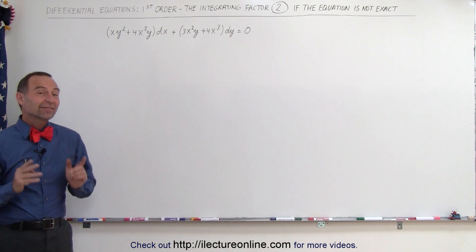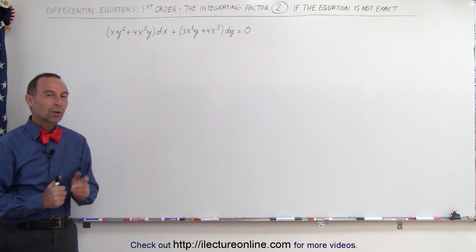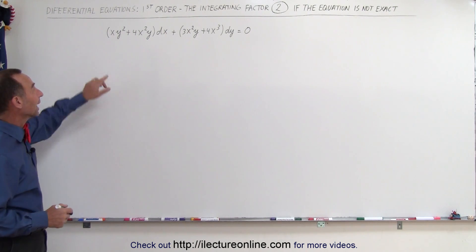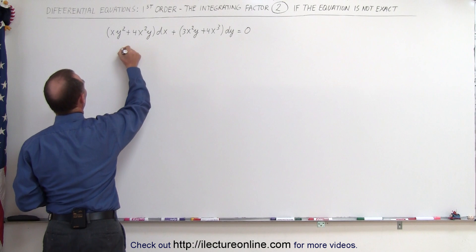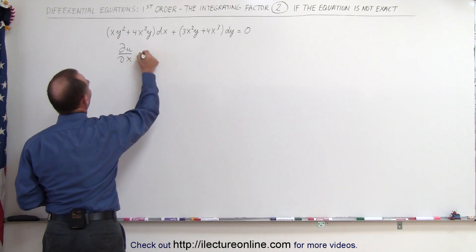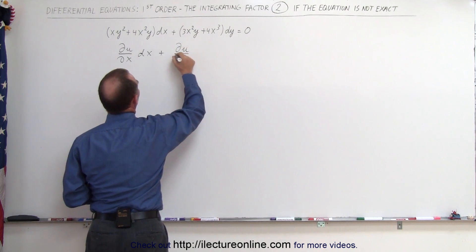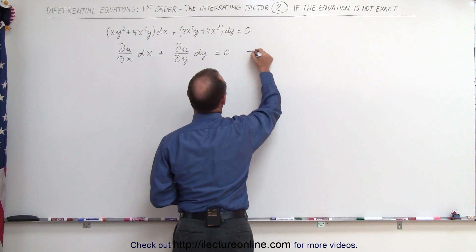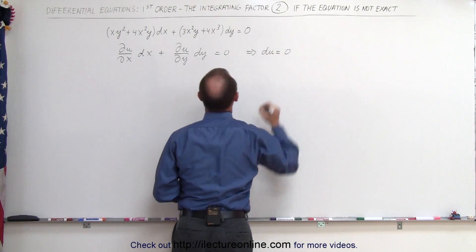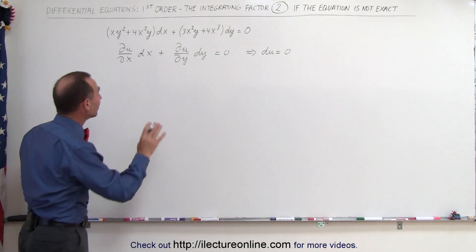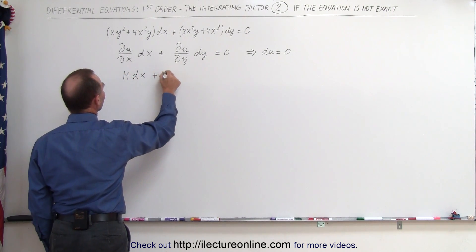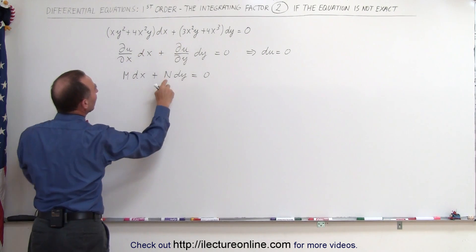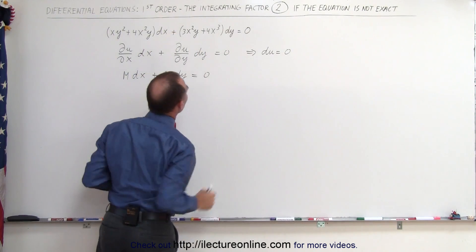Welcome to ElectronLine. We're going to do an example where the equation is not an exact equation and we will need an integrating factor to find the solution. This is in the format where M dx plus N dy equals 0, where M is the quantity in the first parentheses and N is the quantity in the second parentheses.